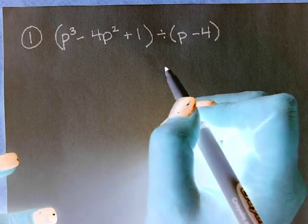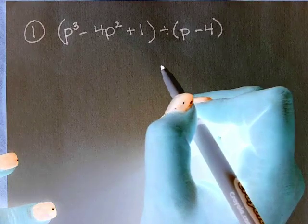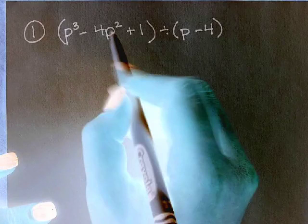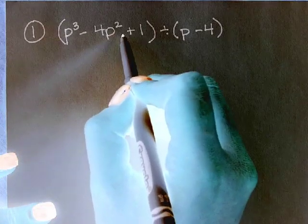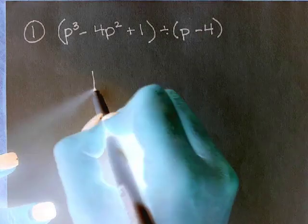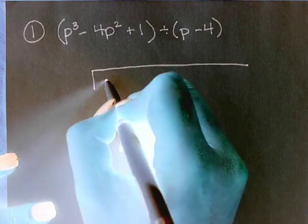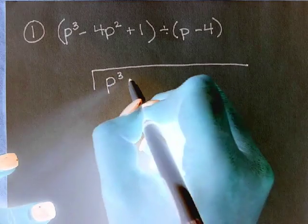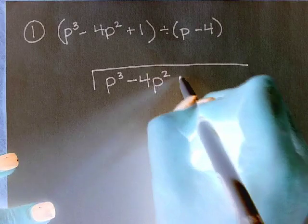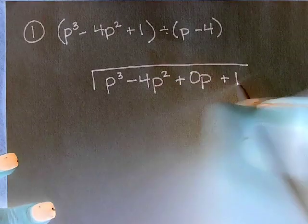Now, there's something strange about this problem. Does anyone see it? Yeah, there's not a plain P. There's a P third, P squared, but not a P to the first power. So we have to add that in there. Okay, so I'm going to go ahead and write my long division symbol. I have P to the third because we have to have all of the terms, and you'll see why as we do the problem. So I have to put a 0P in there, and then a plus 1.